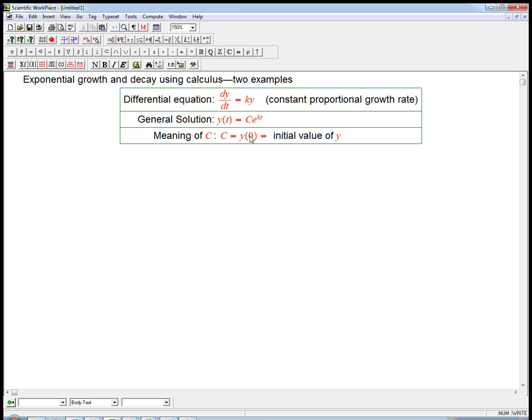So, C equals y(0) equals the initial value of y. Now, that's initial at t equals 0. You might be given something different, and that's exactly one of the examples we're going to do. So here's a just barely changed version of a book problem.